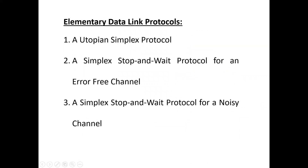Summary of the three protocols: First, the utopian simplex protocol — the sender sends data to the receiver only. Second, the simplex stop-and-wait protocol for an error-free channel — the sender sends data and waits for an acknowledgement. Third, the simplex stop-and-wait protocol for a noisy channel — the sender sends data, assigns sequence numbers to frames, and if there is any error in a frame, retransmits that frame using its sequence number. These three elementary data link protocols perform the basic functions of framing, error control, and flow control.